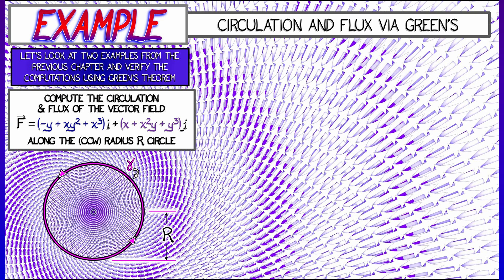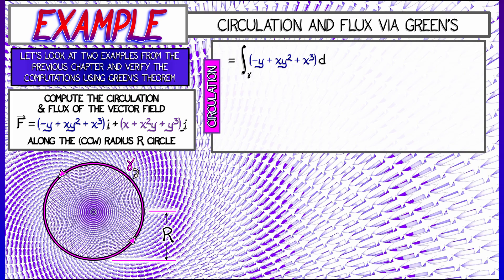Let's start with the circulation. If we integrate the work one-form quantity minus y plus xy squared plus x cubed dx plus quantity x plus x squared y plus y cubed dy,